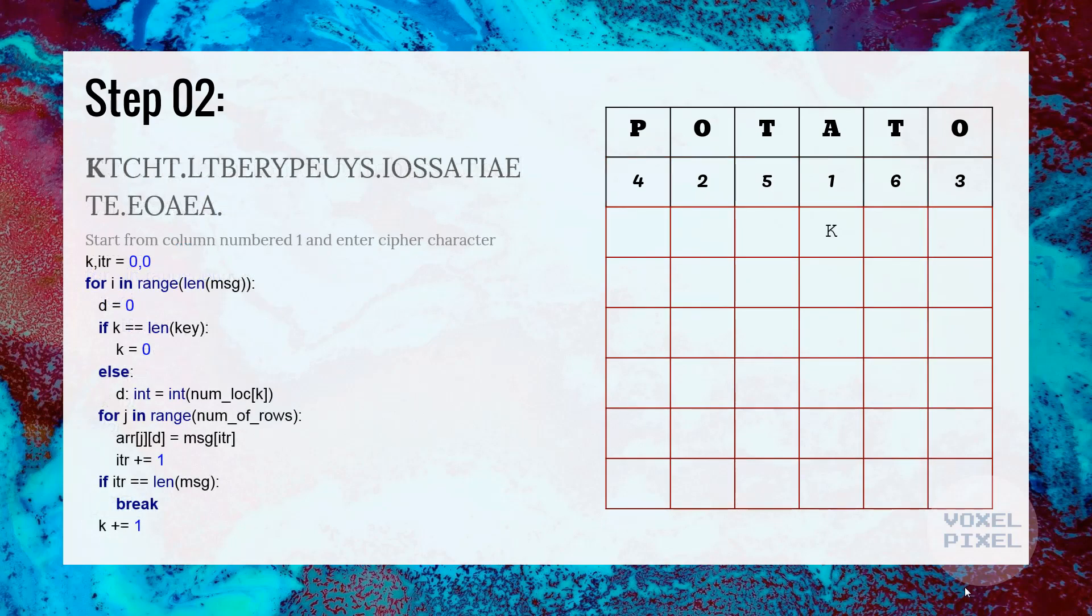Now, we will begin by column number 1 and putting ciphertext into columns one by one. Under number 1, first letter K, followed by a T, then C, H, T, and dot. Then all the rows are filled. Next, we will move on to the column number 2 and we will put next letter. We will keep on doing this until entire grid is filled with the ciphertext.